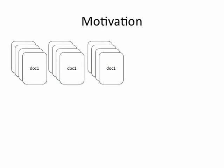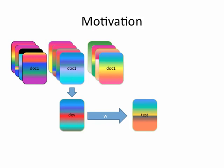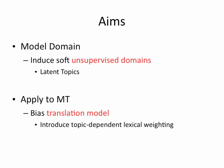But we hope that we can do better, because if you think about it, any particular theme can appear in a number of domains, and within a particular document there could be a variety of styles or content expressed in any given document. We hope to be able to discover this diversity automatically, in an unsupervised way, using Topic Models, and we're going to use these soft unsupervised domains that we induce from our corpus in order to bias our lexical weighting in a translation model.